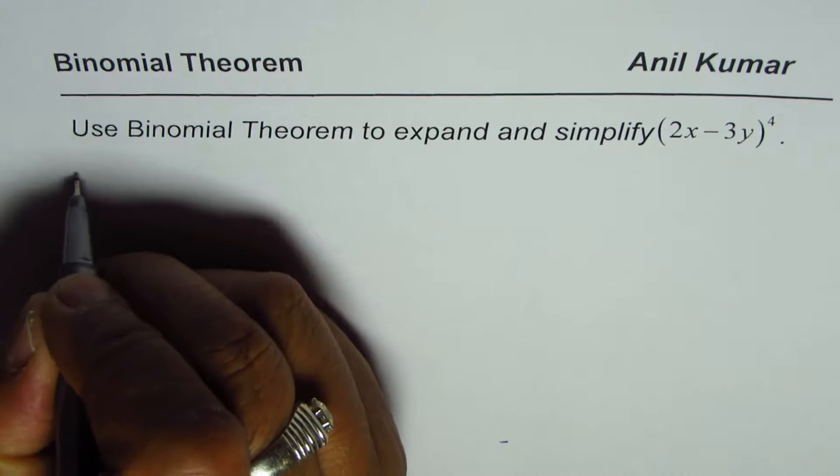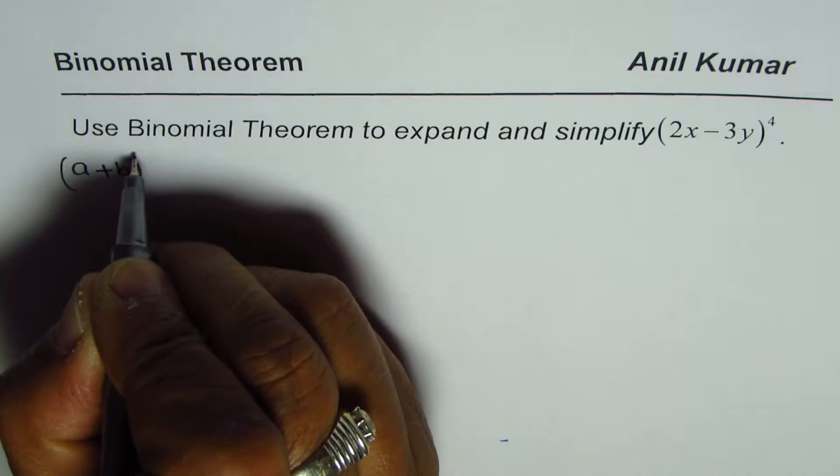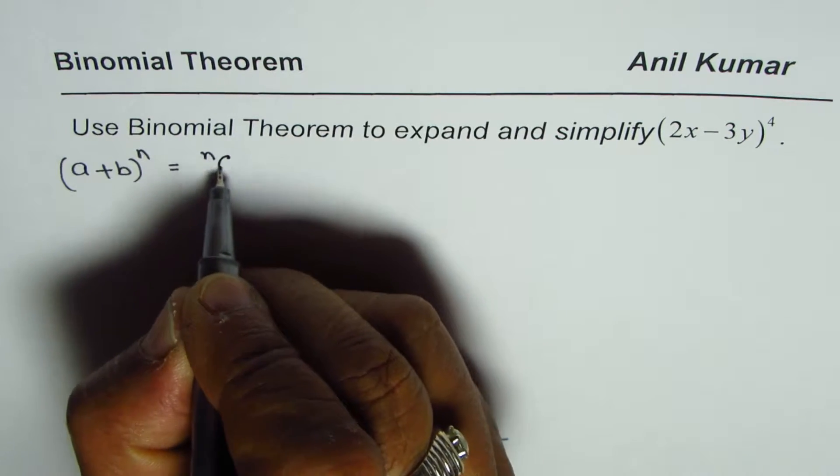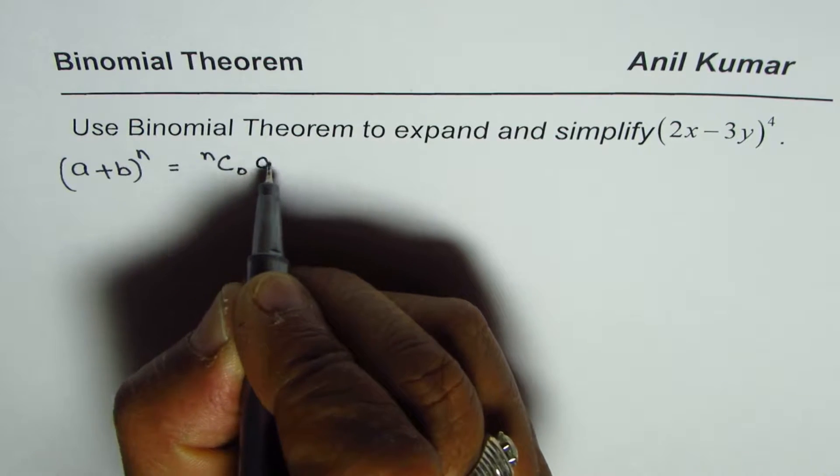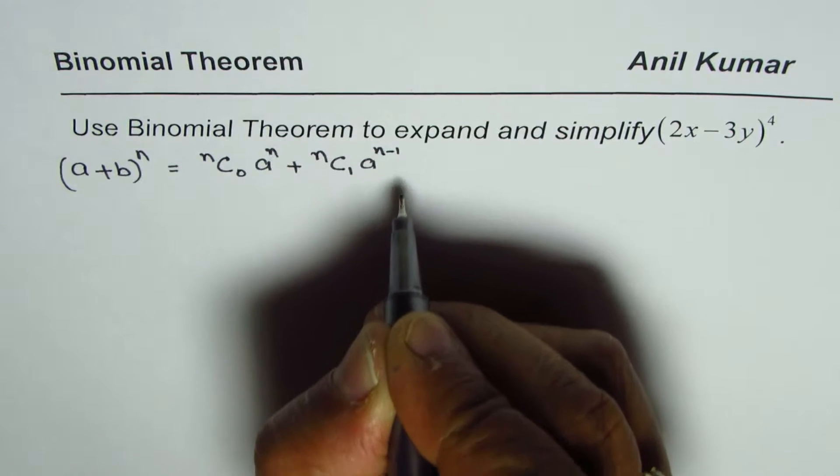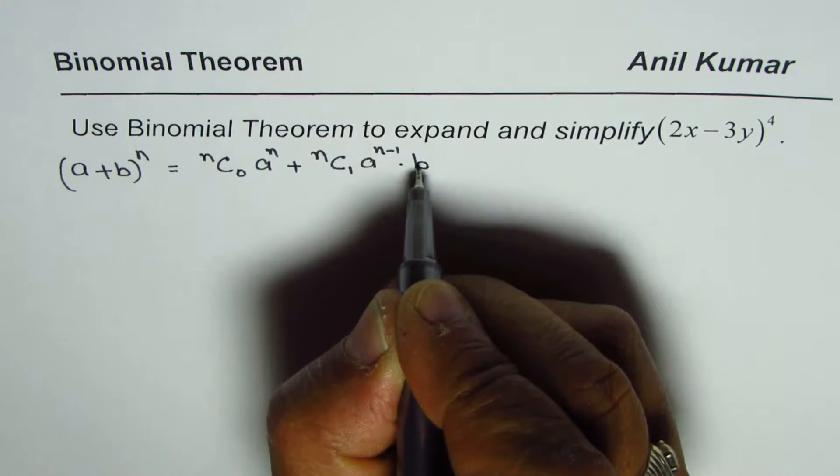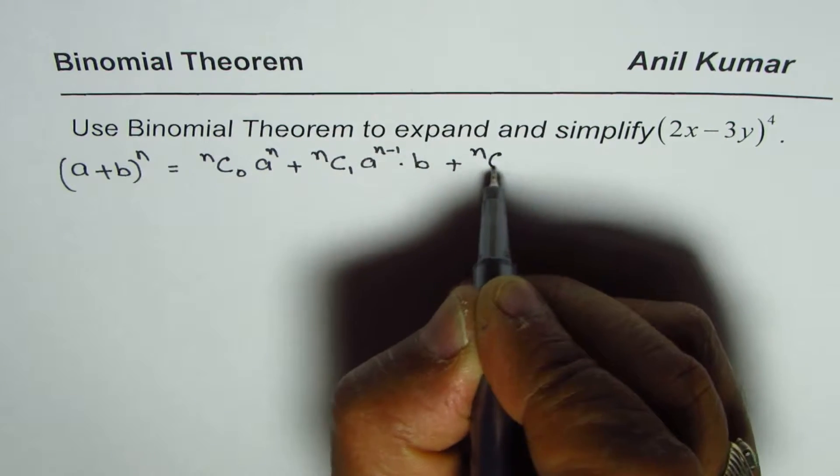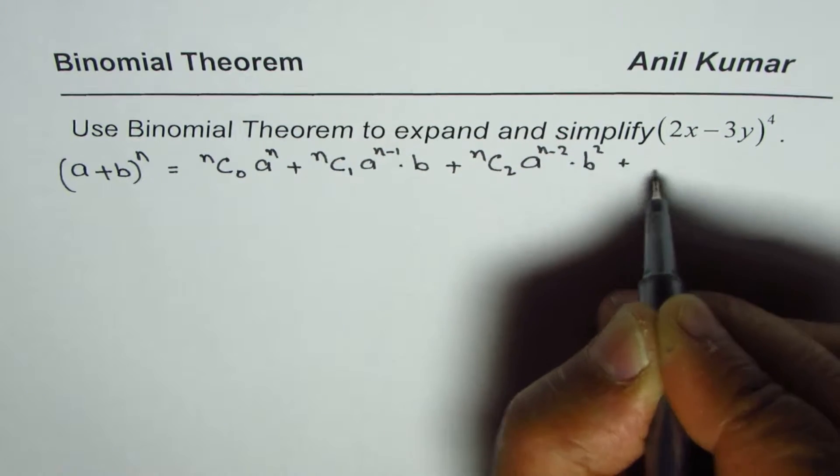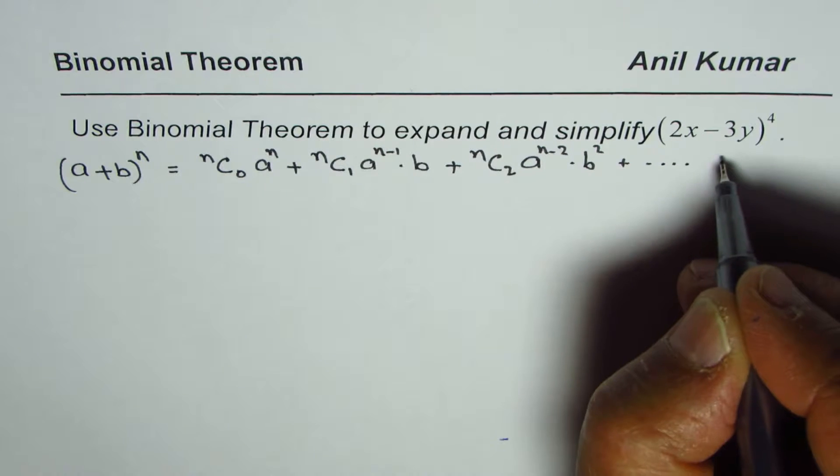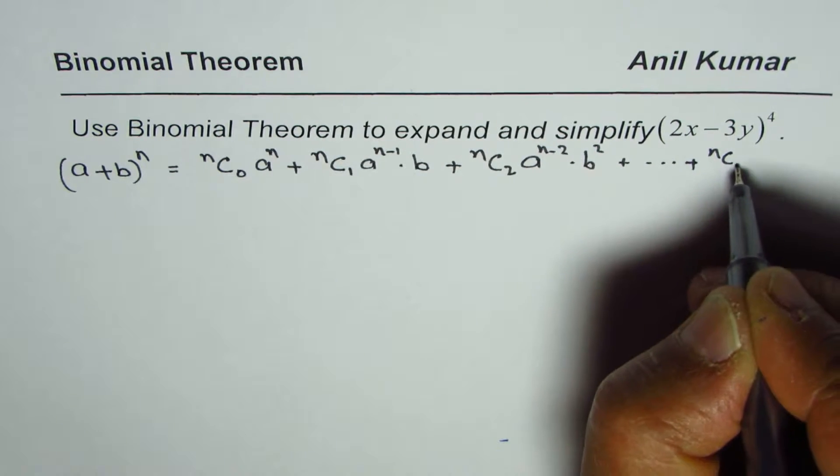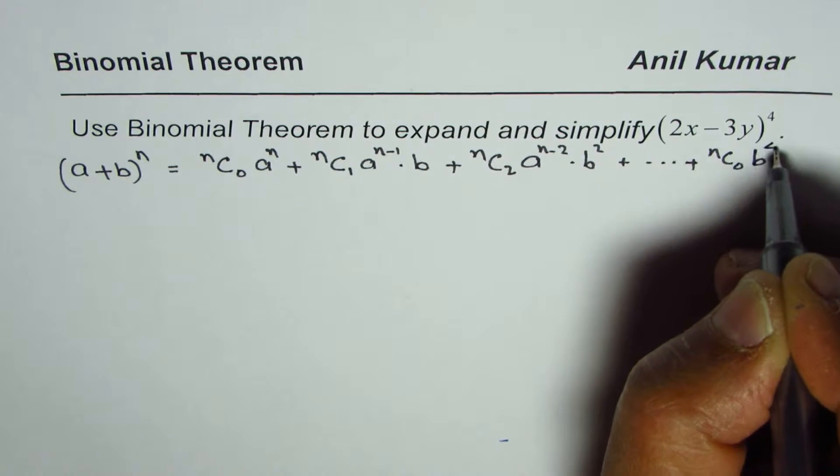In general if I have a plus b to the power of n it could be written as nC0 a to the power of n plus nC1 a to the power of n minus 1 times b plus nC2 a to the power of n minus 2 times b square plus so on till nCn b to the power of n.